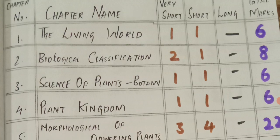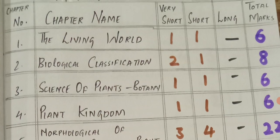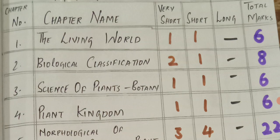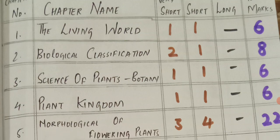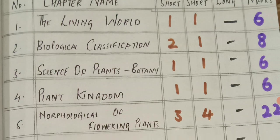Let us see the living world. The first chapter: 1 VSCQ and 1 SCQ, total 6 marks. Biological classification: 2 VSCQs, 1 SCQ, total 8 marks.